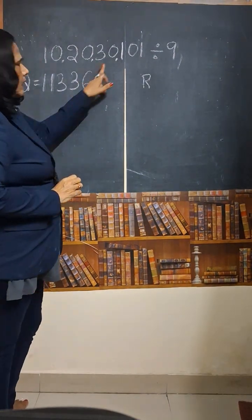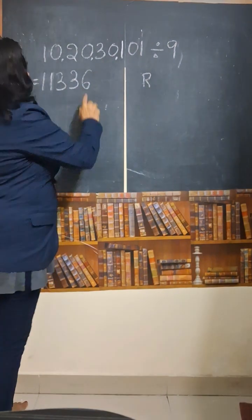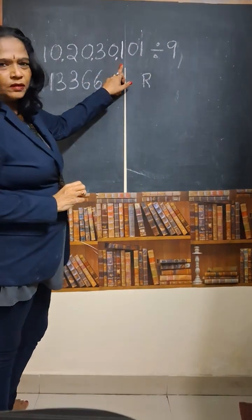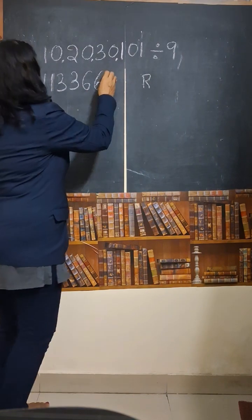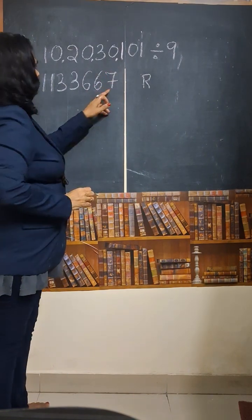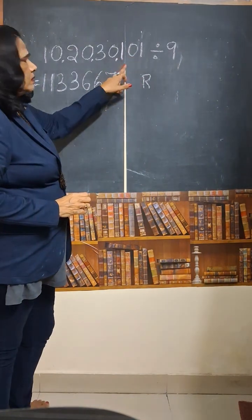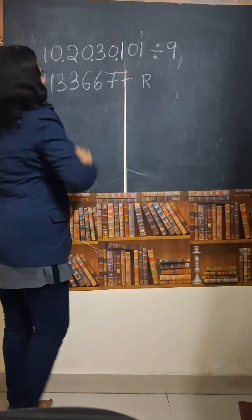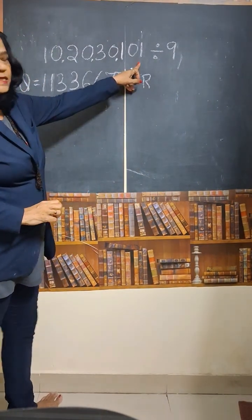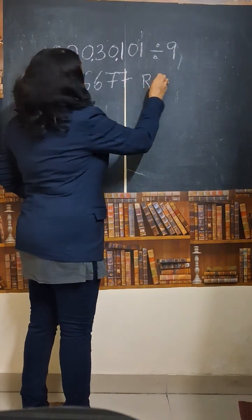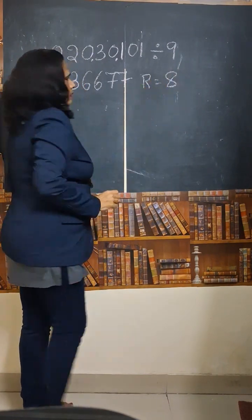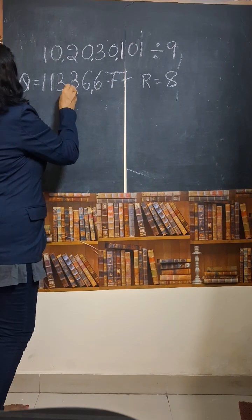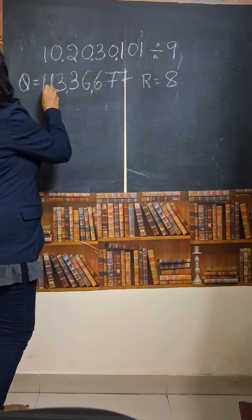6 added to the next number, which is 0: 6 plus 0 is again 6. Add this to the next number: 6 plus 1 is 7. Again, add this to the next number, 0: that is again 7. Add this 7 to the next number, 1: that is 8. The last number is the remainder. So this is the answer for the given number.